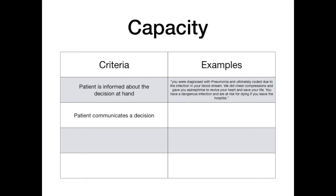Criteria number two: the patient communicates a clear decision. In order for a patient to have capacity to make a specific medical decision, they have to actually communicate and articulate what their decision is. In this case, the patient might say something like, 'Get me the hell out of this hospital right now.' They're telling you what they want. After being informed and satisfying criteria number one, the patient has taken all of that information in and said, 'I want to leave.' If the patient never makes a decision or doesn't give you an answer, then they don't have capacity.